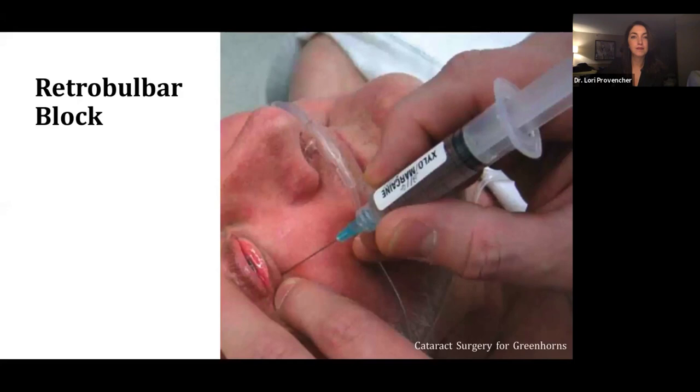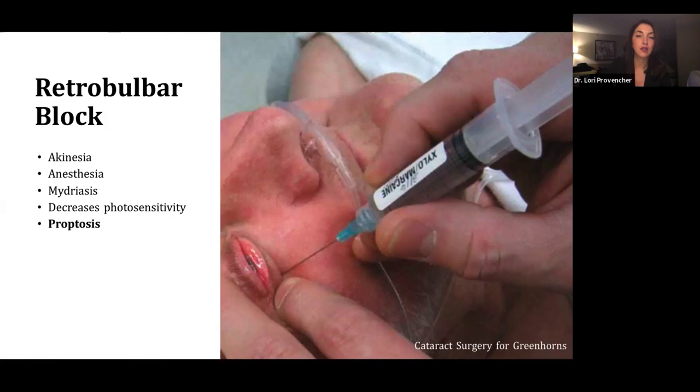And finally, for talking about exposure issues, I think you should always keep in mind the use and the utility of a retrobulbar block. Not only does it provide great akinesia and anesthesia for when you're first starting out, but if you get the block in the right spot, you can get really nice proptosis and better exposure. So we used this a lot when we were first training.